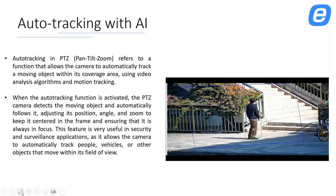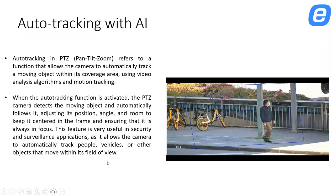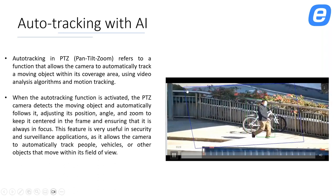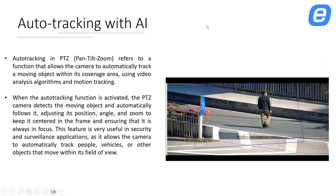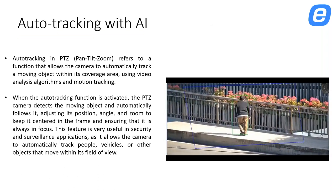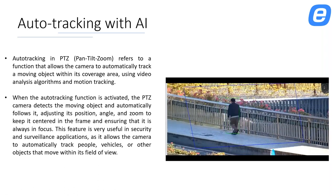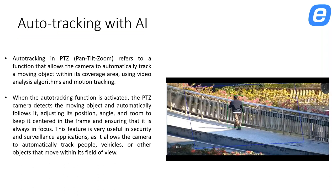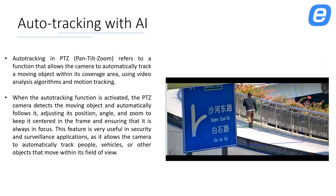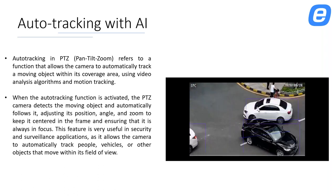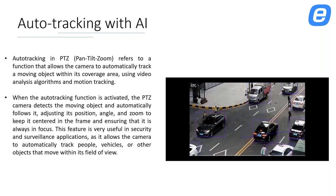Here is a video showing how human auto tracking works. You set the area to wherever you want the camera to track humans. The video also shows vehicle auto tracking — you can see the vehicle coming out of the garage and the camera automatically detects and tracks that vehicle.